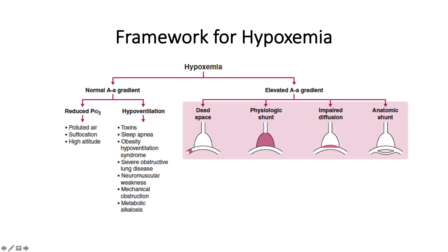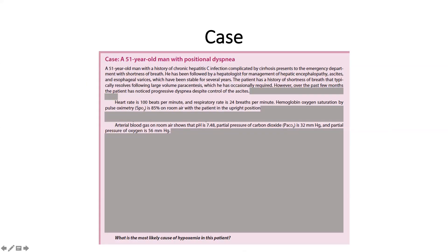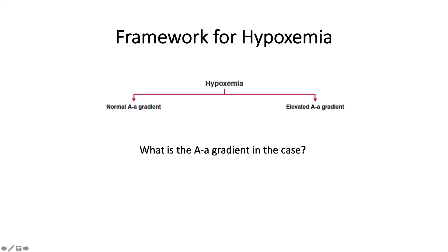So here we have our full framework for thinking about hypoxemia. Let's go back to our case and calculate the A-a gradient. PAO2: 0.21 times (760 minus 47) minus 32 divided by 0.8 gives big A of 110 mmHg. The little a from the ABG is 56 mmHg. So 110 minus 56 equals 54 mmHg — he's in his 50s and is allowed up to 27, so 54 is clearly elevated. We're dealing with the elevated A-a gradient arm of the framework. We can now eliminate hypoventilation and reduced inspired O2 as causes.